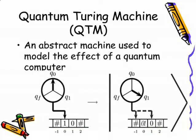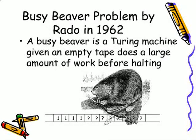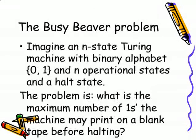A quantum Turing machine is an abstract machine used to model the effect of a quantum computer. A busy beaver is a Turing machine that, given an empty tape, does a large amount of work before halting. Imagine an n-state Turing machine with binary alphabet 0 and 1, and n operational states plus a halt state. The problem is: what is the maximum number of ones the machine may print on a blank tape before halting?